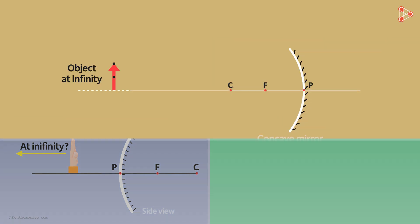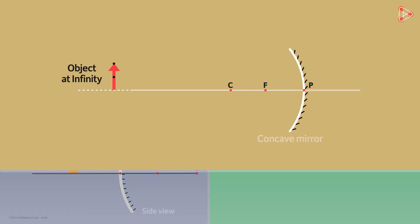Well, in the case of a concave mirror, when the object was infinitely far away, the image was formed at a single point. It was real, point-sized and a highly diminished image. Point-sized means that the whole image of the object is formed at a single point.